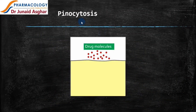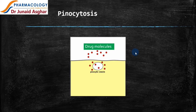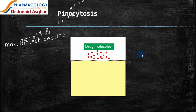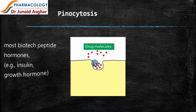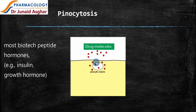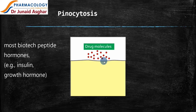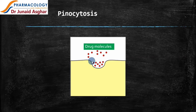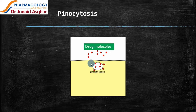Let's see what happens in pinocytosis, which is also called the 'drinking of the cell.' The drug molecules come across and touch the cell membrane. The cell membrane invaginates, folds inside, and makes pseudopods or pinocytic vesicles. These pinocytic vesicles then release the drug into the cell.